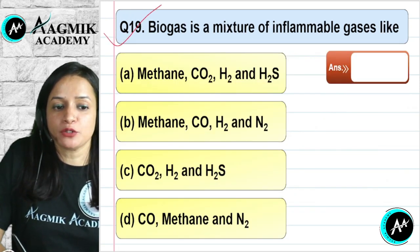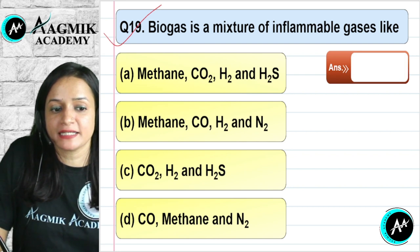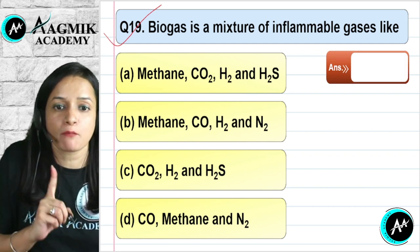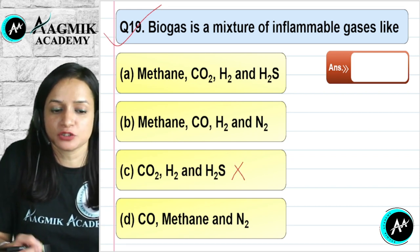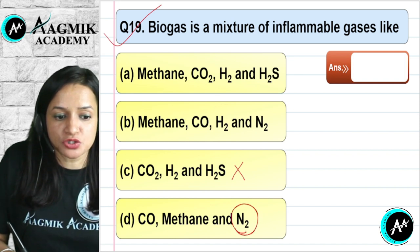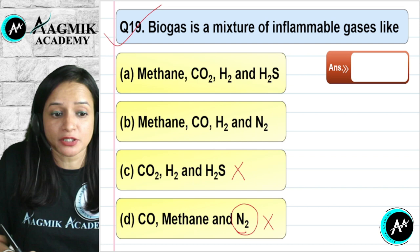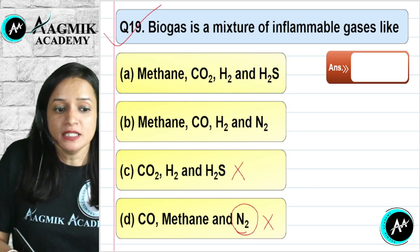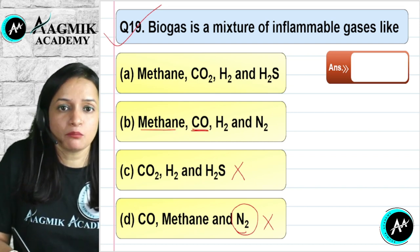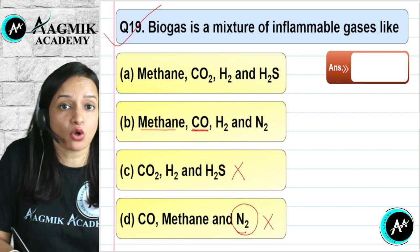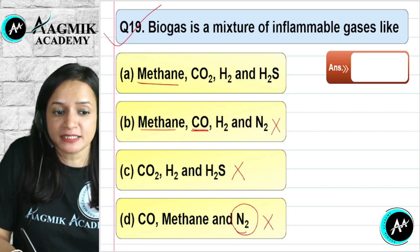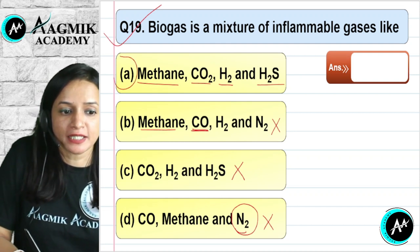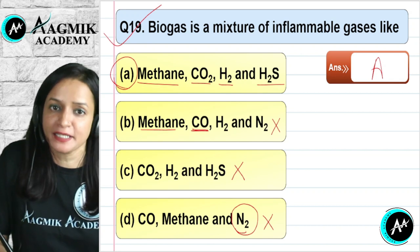Question number 19: Biogas is a mixture of inflammable gases. The most important gas is methane. Option C does not include methane, so eliminate it. Option D includes nitrogen, which is not present in biogas. Option B includes carbon monoxide, which is a toxic gas and not part of biogas. Option A is correct: biogas is a mixture of methane, carbon dioxide, hydrogen, and hydrogen sulfide.